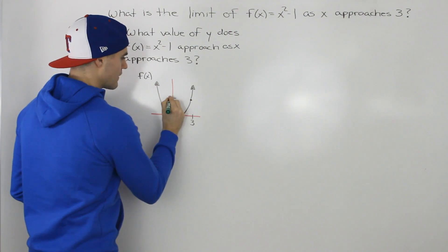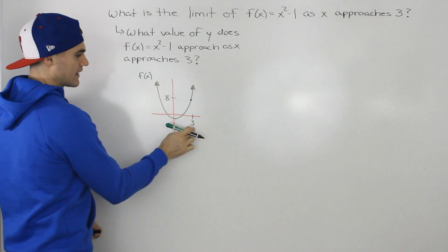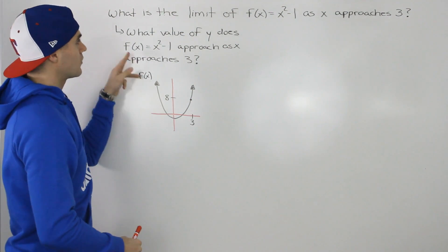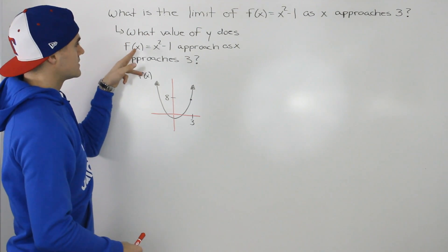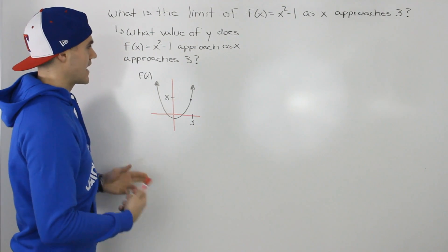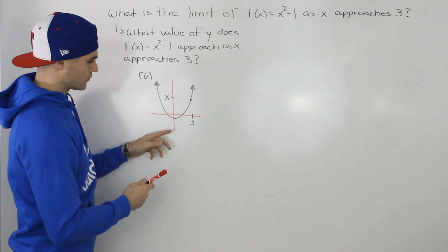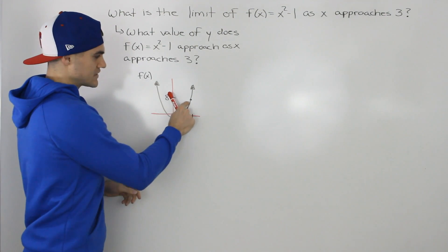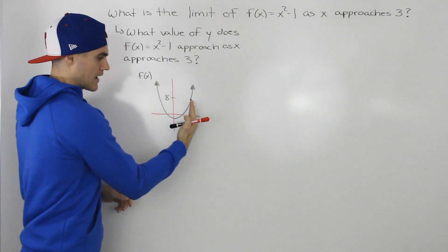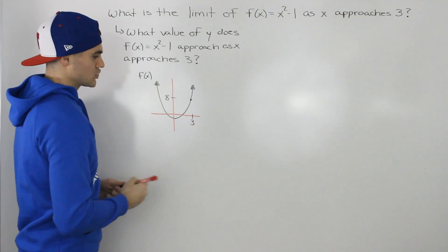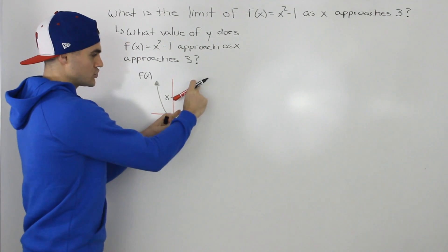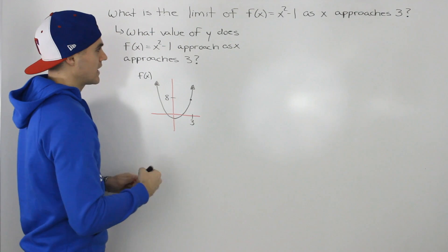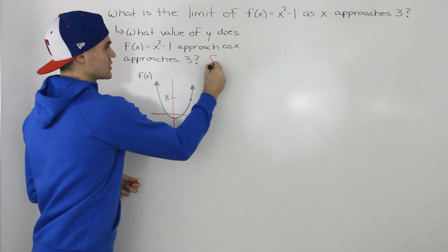If I take this function x squared minus one and graph it, it's just going to be a parabola that's shifted down by one unit. And what will happen as x approaches three? Well, at an x value of three, if we plug in three for the function, we'd have three squared minus one, which would give us eight. So the y value of that function at an x value of three is equal to eight. No matter how we approach this x value of three, the y value on this function is going to approach eight. So the answer to our question is eight.